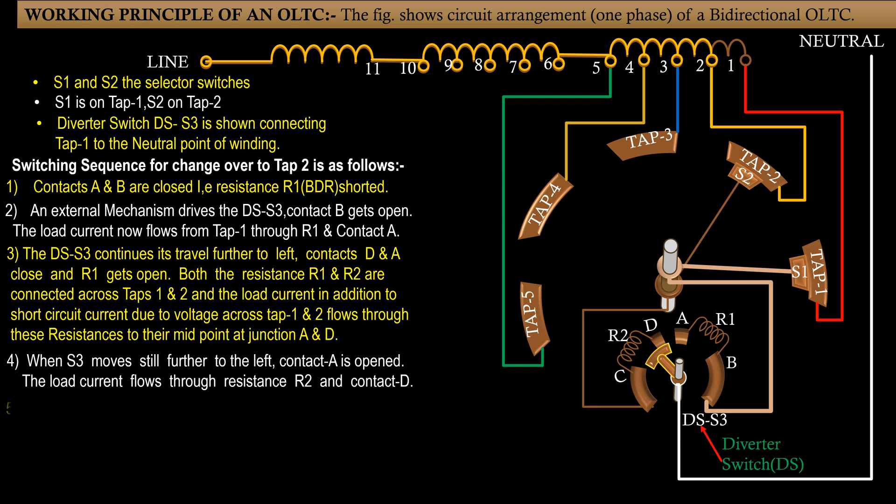Step 5: Next, as DSH3 reaches to more left, contact C and D get close and R2 is short-circuited.